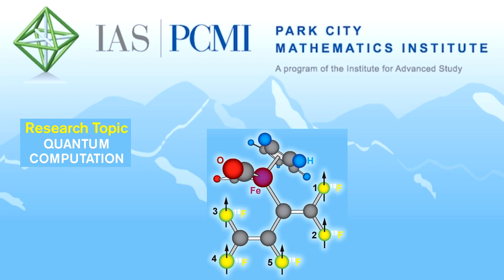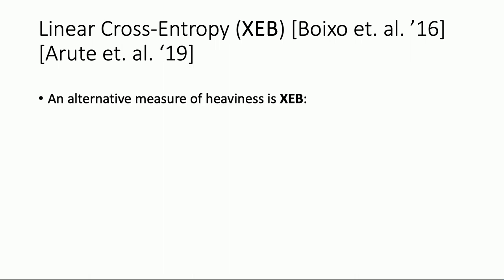We're talking about various benchmarks used to verify that we're sampling from the right output distribution when we consider random circuit experiments. The one that Google is most partial to recently has been the linear cross-entropy benchmark. I think of it as an alternative measure of heaviness. We've seen HOG and QUATH, which measure that maybe a little more directly.